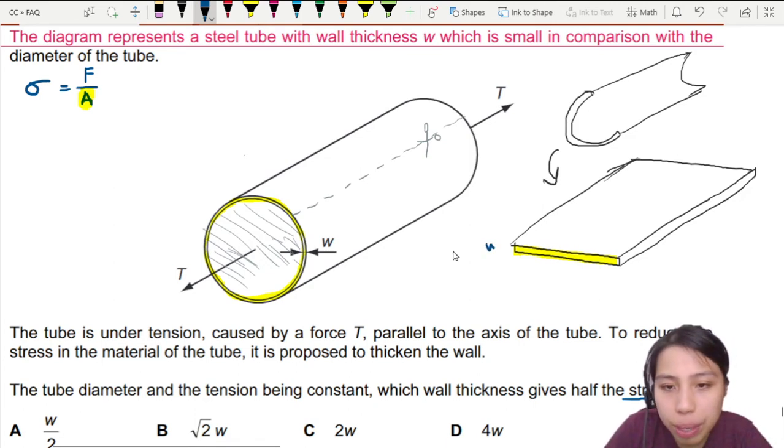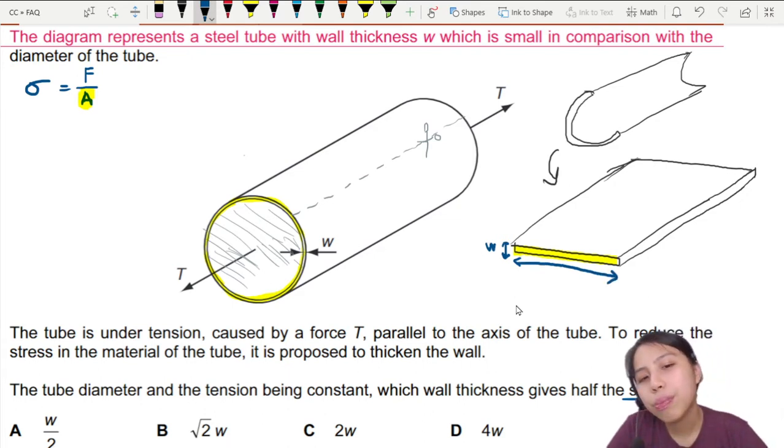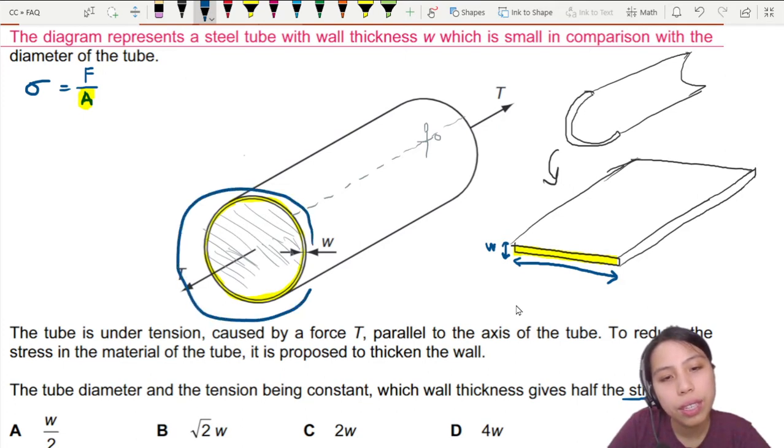The width is going to be this thickness right here. It's a bit small, hard to see. How about the length? What is this length? That length previously was, what was the previous length here? That is the circumference of a circle.